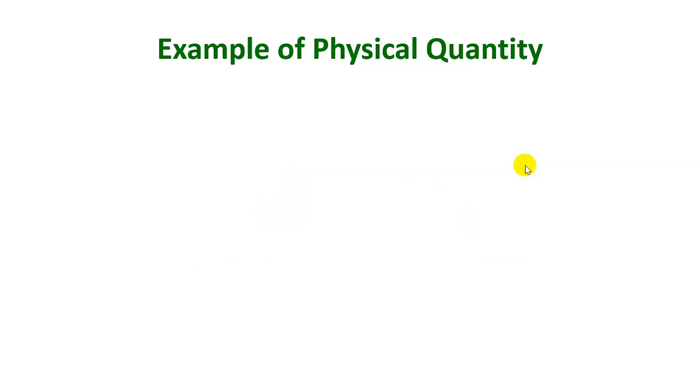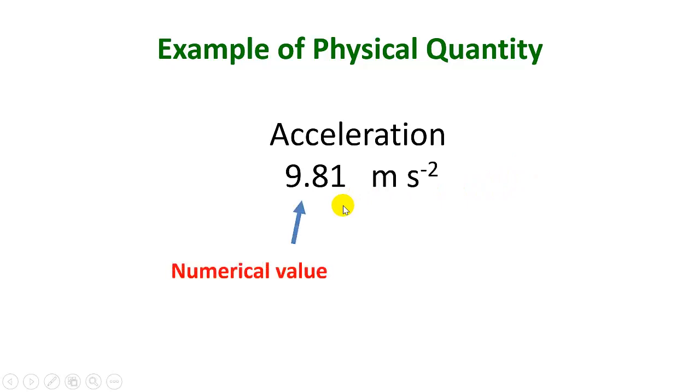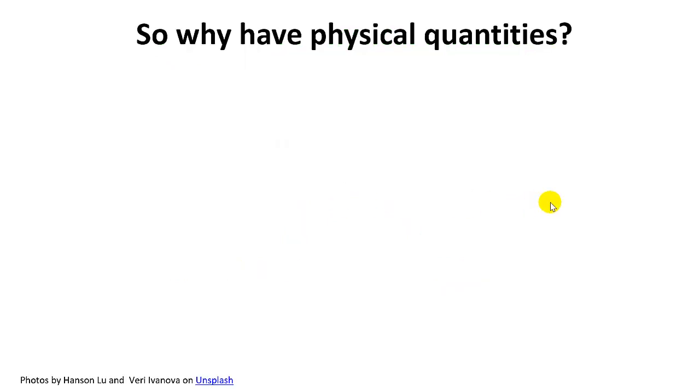let us look at an example such as acceleration. We note that this acceleration has a numerical value of 9.81 and units of meters per second squared. Hence, this is a physical quantity.